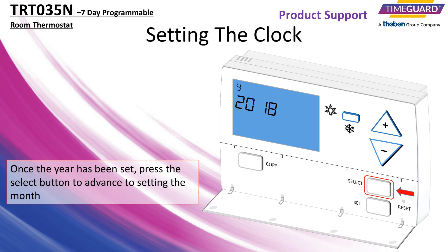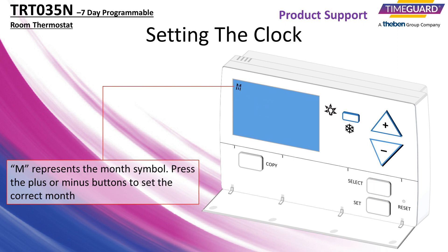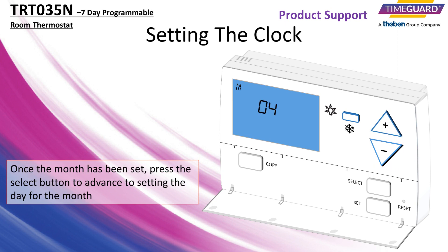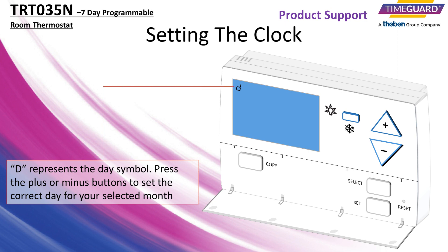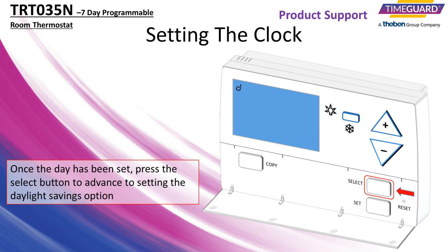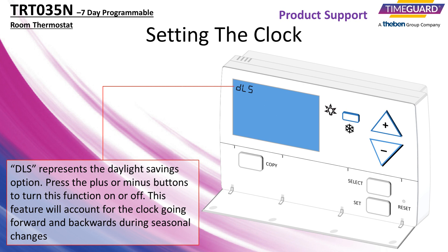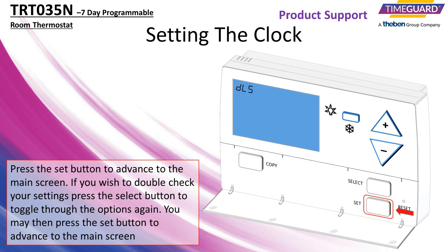Once the year has been set, press the select button to advance to setting the month. Press the plus or minus buttons to set the correct month. Once the month has been set, press the select button to advance to setting the day for the month. D represents the day symbol. Press the plus or minus buttons to set the correct day for your selected month. Once the day has been set, press the select button to advance to setting the daylight savings option. DLS represents the daylight savings option. Press the plus or minus buttons to turn this function on or off. This feature will account for the clock going forward and backwards during seasonal changes. Press the set button to advance to the main screen.